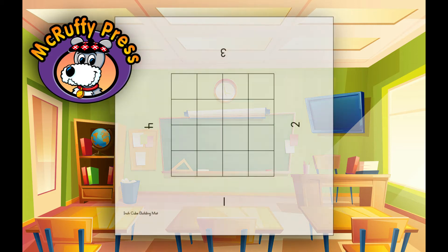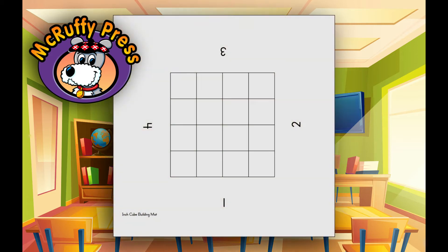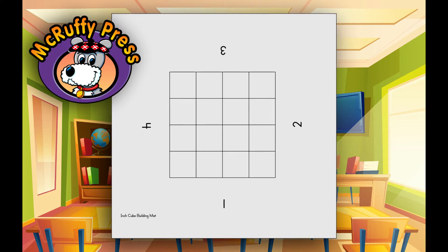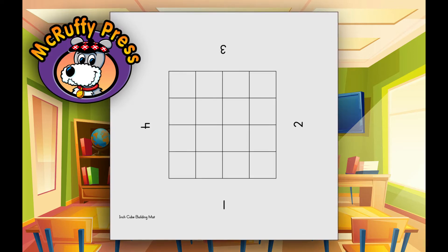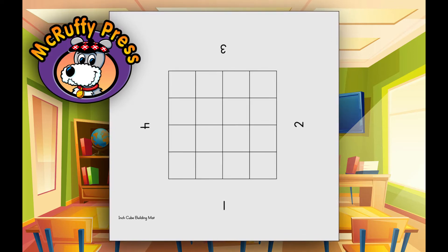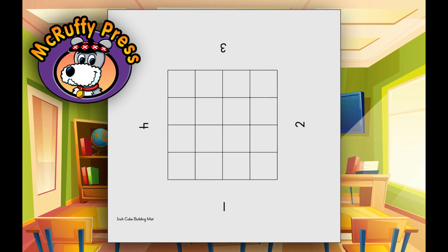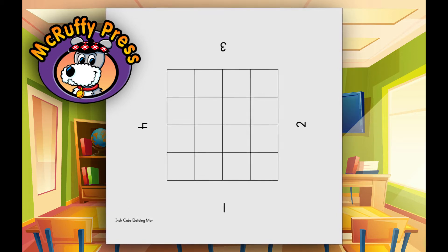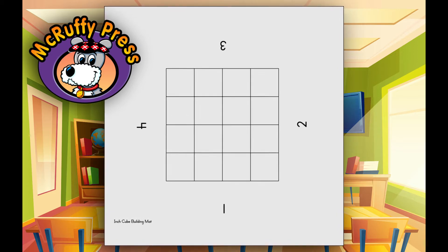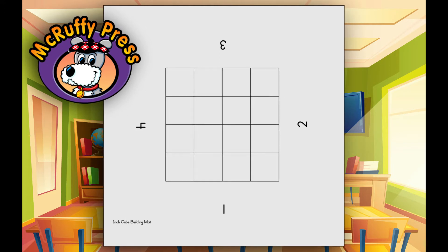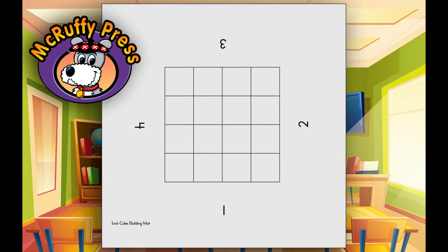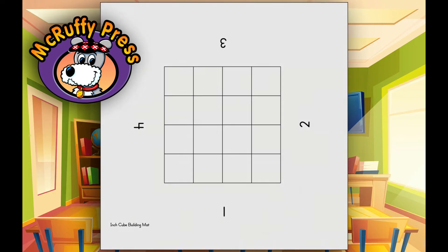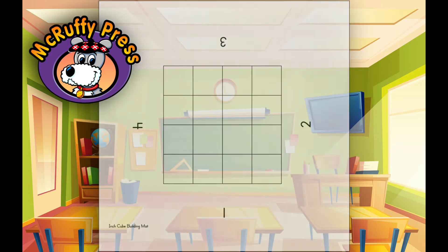Build each design on a piece of paper so it can be easily turned to see the next view. We have created a building matte PDF complete with a four by four square grid. Cut on the dashed line to make it a square. You can find a link for the PDF on the cube video page in the McRuffey Resource Center, or just use a plain piece of paper.